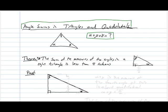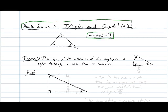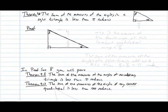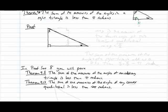So theorem 9.10 takes care of a special case for us. It says that the sum of the measures of the angles in a right triangle is less than pi radians. So we have one assumed angle to be pi over 2, and the other two angles are alpha and beta.